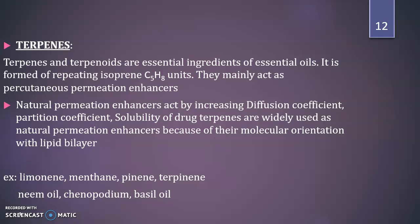Terpenes and terpenoids are essential ingredients of essential oils, formed by repeating isoprene units in the molecule. They act mainly as percutaneous permeation enhancers and are natural permeation enhancers which act by increasing the diffusion coefficient, partition coefficient, and solubility of the drug. Terpenes are widely used as natural permeation enhancers because of their molecular orientation with the lipid bilayers. Examples include limonene, alpha-pinene, terpinene, neem oil, basil oil, and others.